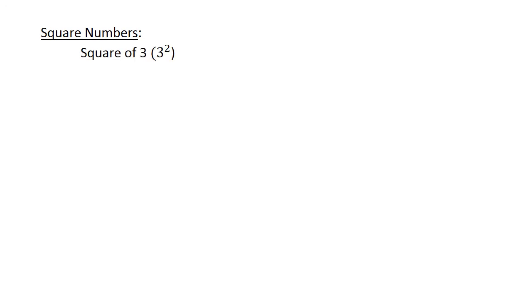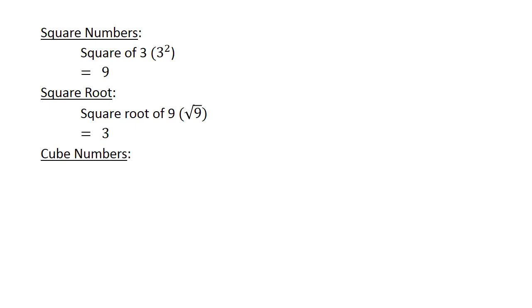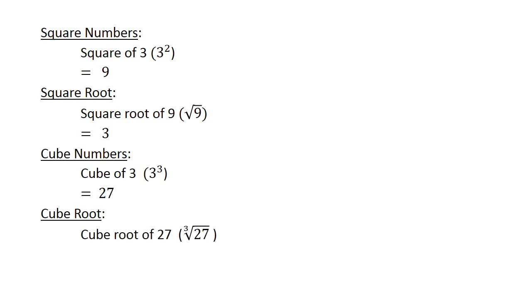Square numbers: the square of 3 equals 9. The square root of 9 equals 3. Cube numbers: the cube of 3 equals 27. The cube root of 27 equals 3.